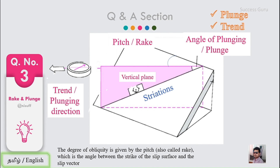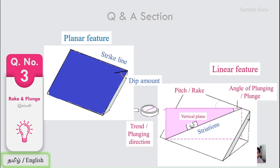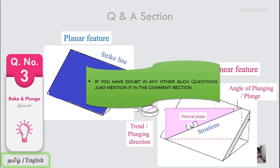To summarize: when dealing with a planar feature, you explain the strike direction, the dip direction, and the dip amount. When dealing with a linear feature, you explain the trend — the orientation direction — and the plunge amount, which is the amount of inclination, and the rake if required, which is the angle the lineation makes with the bedding plane or the plane in which it forms. If you have any questions, mention them in the comment section and we will explain in upcoming videos. Thanks for watching, have a great day.